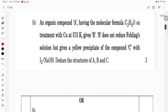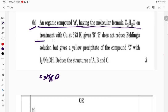Now we are going for the second part: an organic compound A having molecular formula C3H8O. On treatment with copper at 573 Kelvin it gives B.